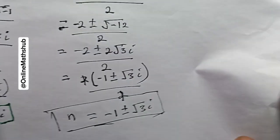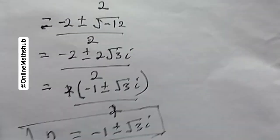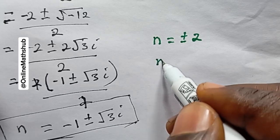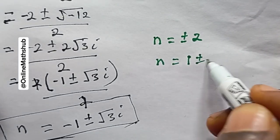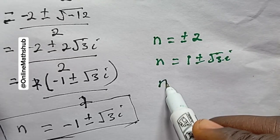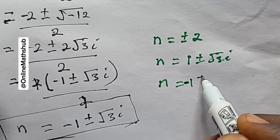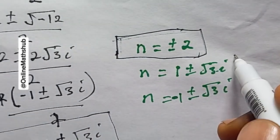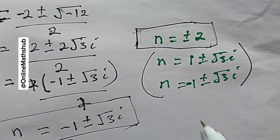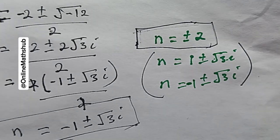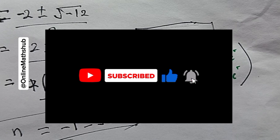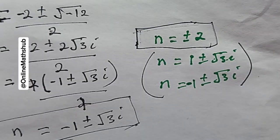Following through all solutions: n = ±2 are the real solutions, n = 1 ± √3·i are complex solutions from Case 1, and n = -1 ± √3·i are complex solutions from Case 2 — giving us six values total. If you've understood the solution, let me know in the comments. Like, share, and subscribe so you stay updated when we release new content. Thank you for watching!